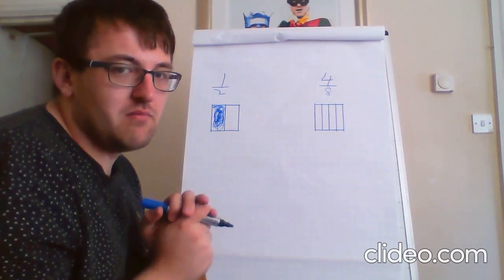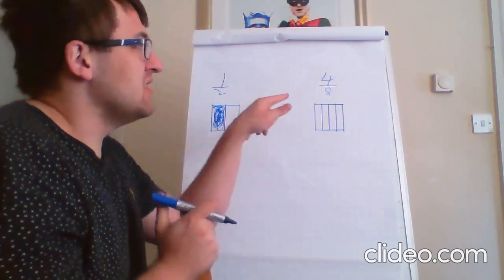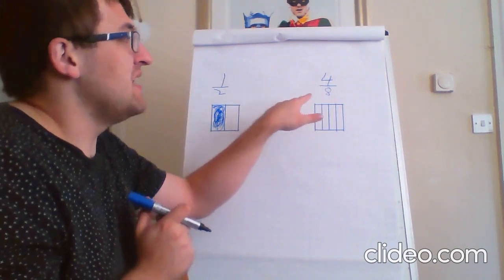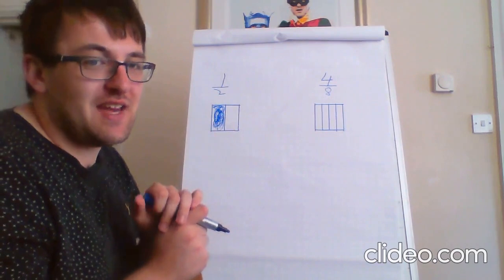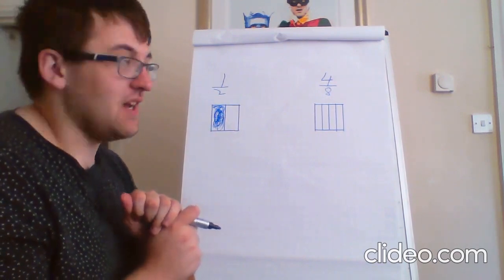Why has he done it wrong? Because he's drawn four parts, when he should have drawn eight parts, because the denominator is eight. Well done if you noticed that mistake at home.